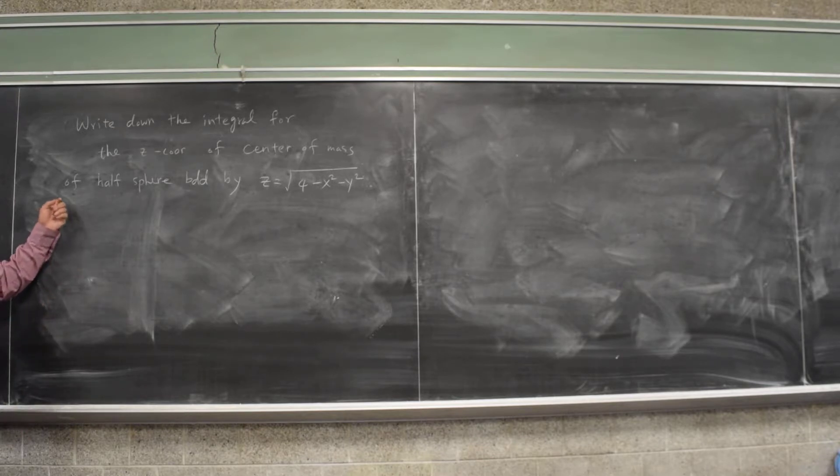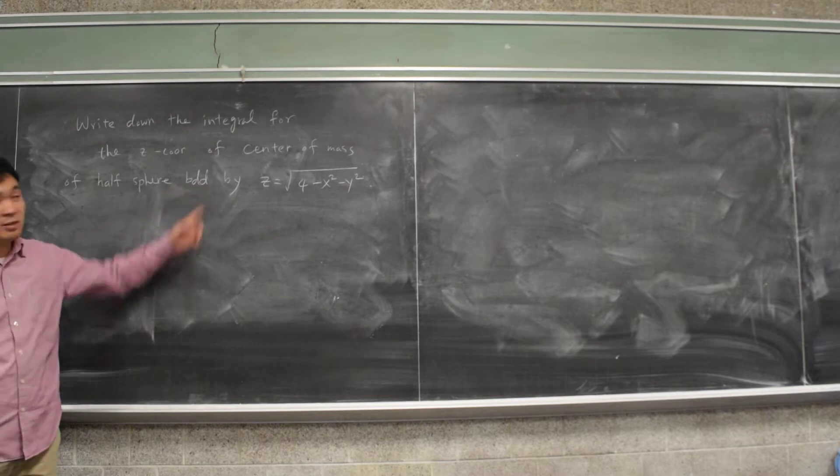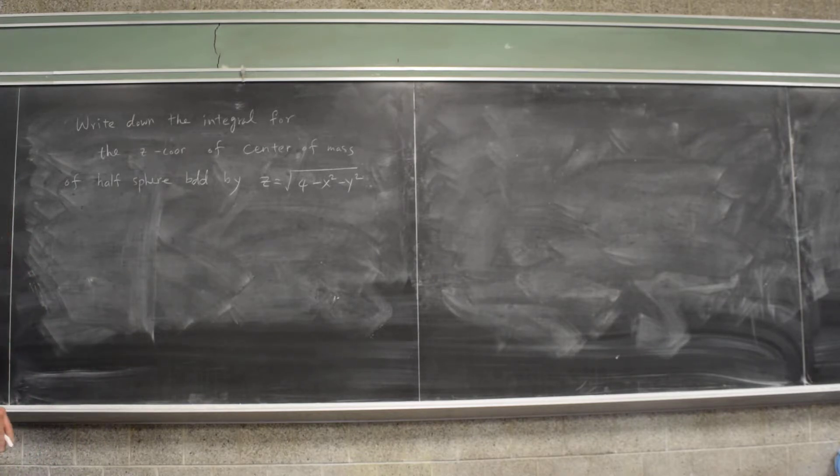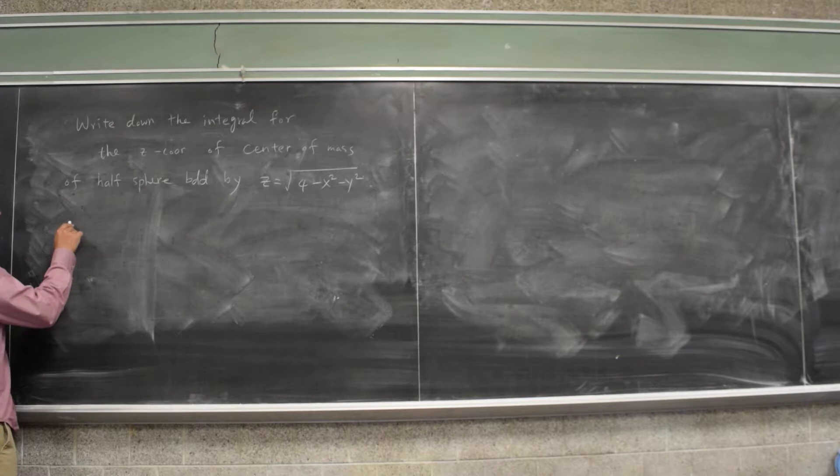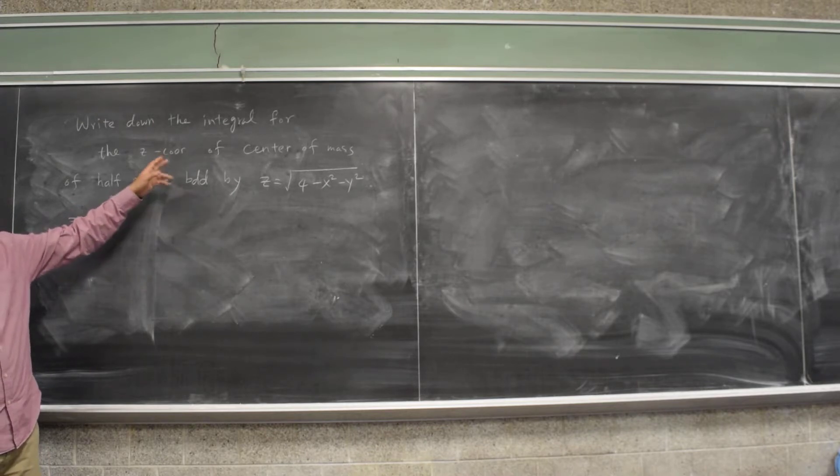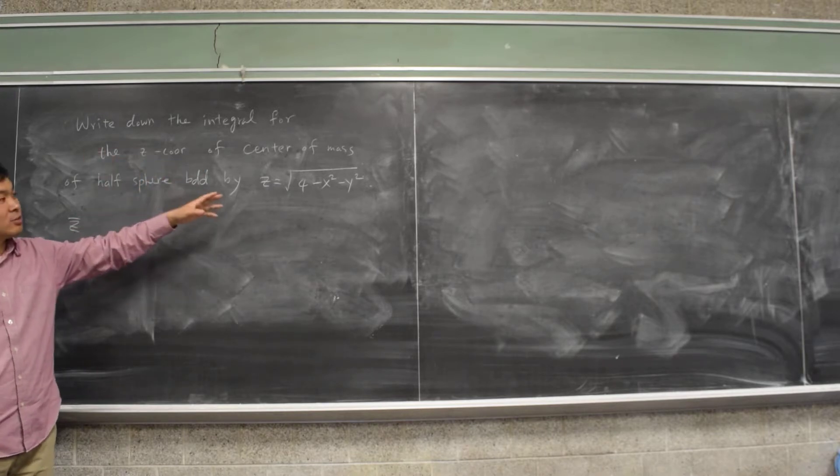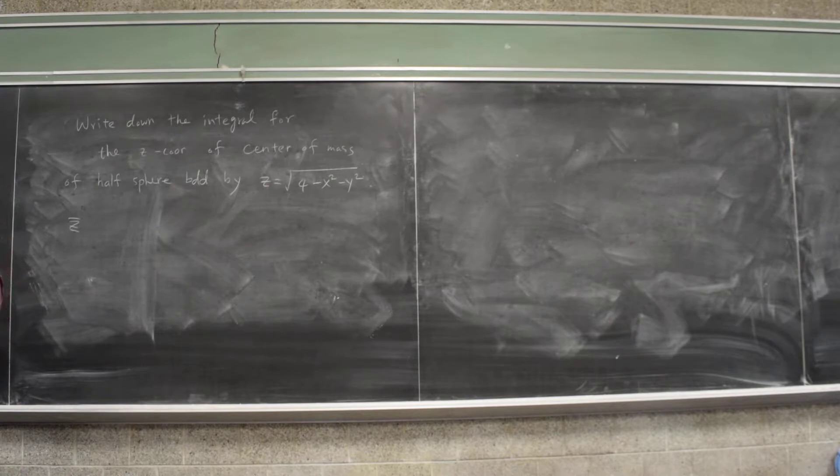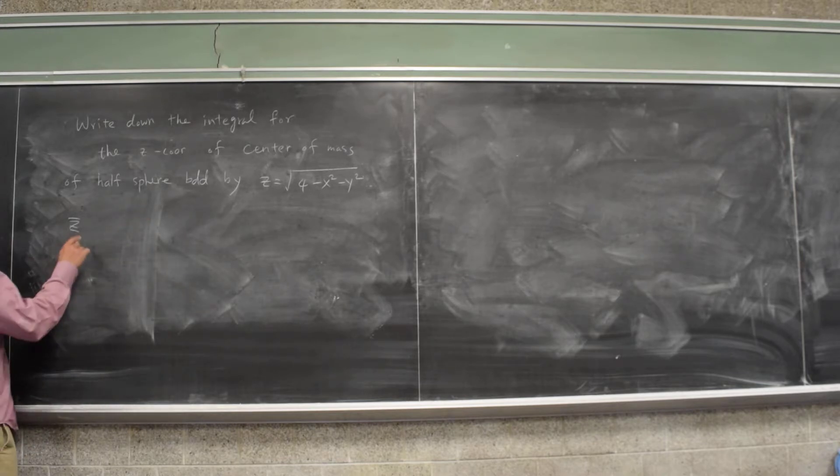And there's something lacking in this question, I should say the thing has uniform density. Was that a center of mass of half sphere? Bounded, BDD, bounded by. I just write BDD for bounded. I meant that I should either say find the centroid or at least say center of mass assuming that it has constant uniform density. Because if it's not uniform density, then you have to include the rho somewhere.